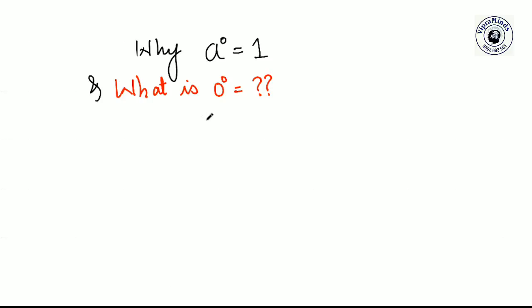If I ask you, what is 5 divided by 5? That is equal to 1. Or 10 divided by 10 is also equal to 1. Or 1000 divided by 1000 is also equal to 1. So when you divide a particular number by itself, you get 1.